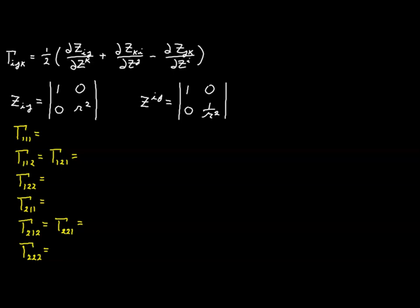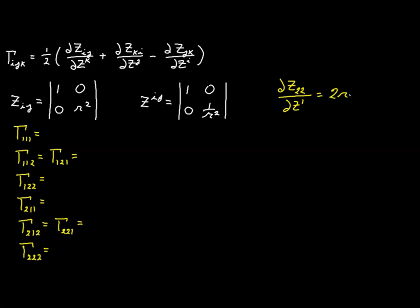In the covariant metric tensor, there's only one component that is not constant: element g₂₂, which depends only upon the variable r — not on theta at all. So the only partial derivative that is non-zero is the partial derivative of g₂₂ with respect to z₁, which is just the partial of r² with respect to r, and that equals 2r. All other partial derivatives are zero.